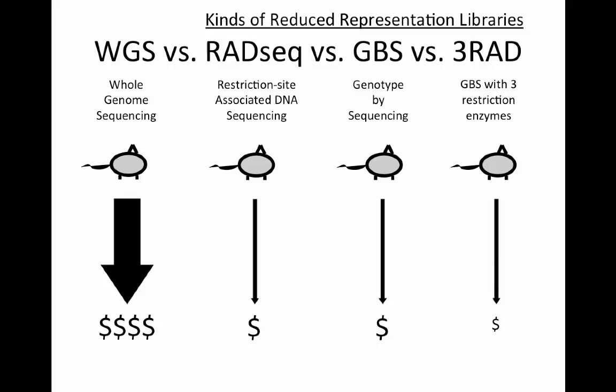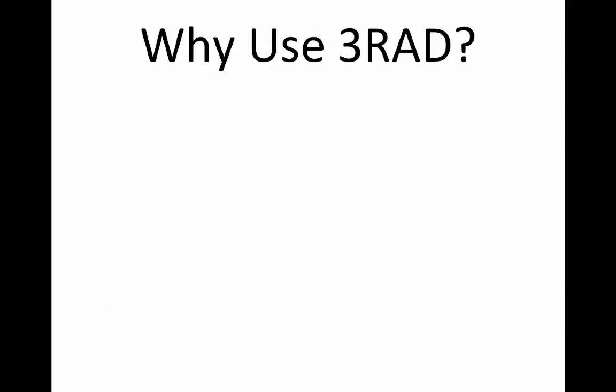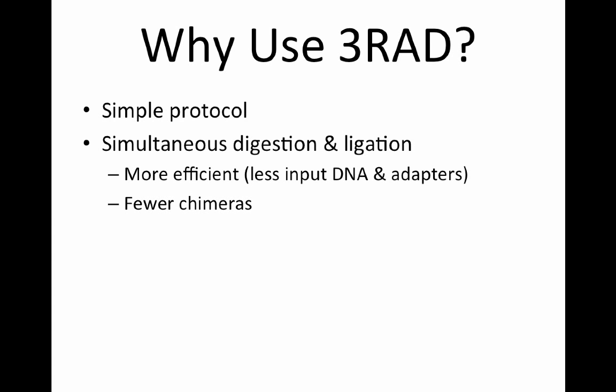With so many options available, why do we need another variant of RADseq or GBS? First, 3RAD is very simple to do. It is faster, easier, cheaper, and more efficient than other existing methods. The primary way that 3RAD achieves these gains is to allow simultaneous digestions and ligation. The adapters are designed to produce the products we want, not adapter dimers. This means less input DNA is required, fewer reagents are needed, and we produce fewer unwanted chimeras.